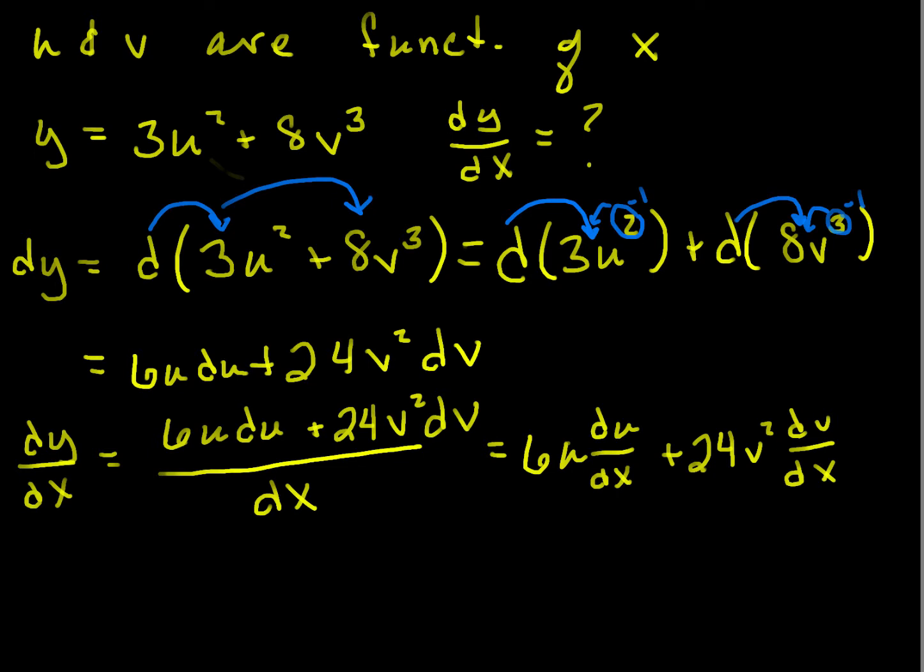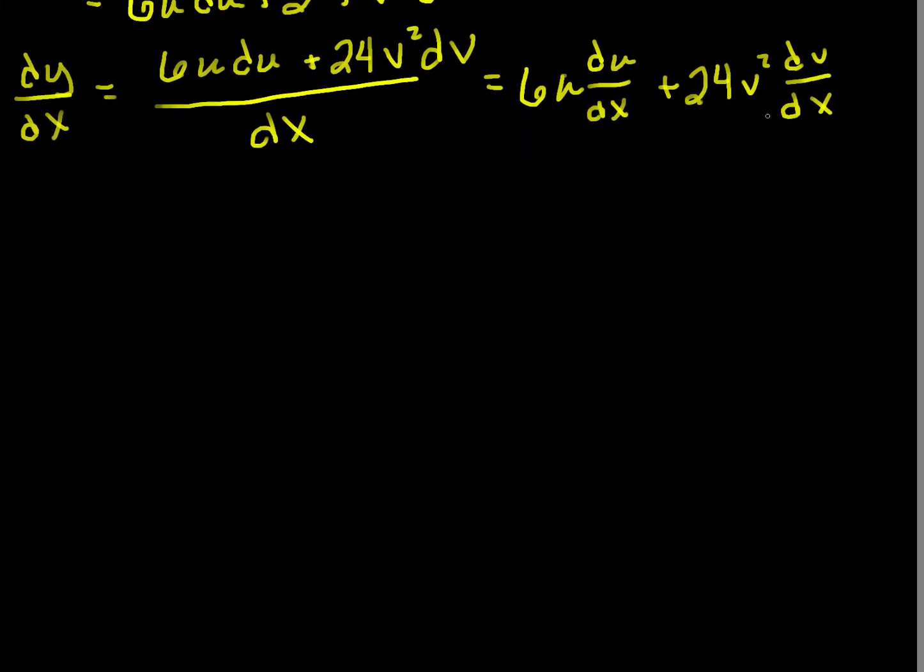So, even though we don't know what u and v are, we know that if we take the derivative with respect to x, it'll be 6 times the function u times whatever the derivative of u is with respect to x, plus 24v squared times whatever the derivative of v is with respect to x. So, let's do another one where we don't know what u and v are implicit or explicitly, but we can still run through the derivative.